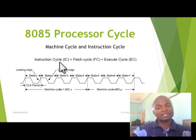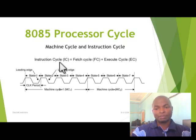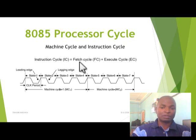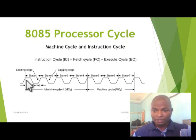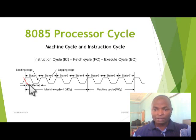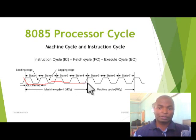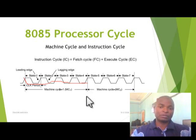In one instruction cycle, we may have many machine cycles — maybe one, two, or three machine cycles. A single instruction cycle comprises a fetch cycle and an execution cycle. If we look at the diagram, starting from T1 up to T4, those are the clock periods. It means that it takes four clock periods — that's the first machine cycle, the fetch cycle. Then the execution cycle starts from state T5 to state T7, meaning it takes three clock cycles.